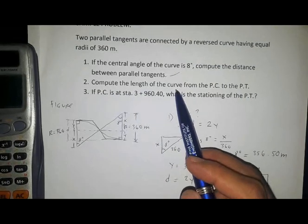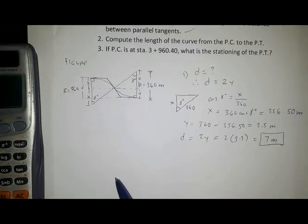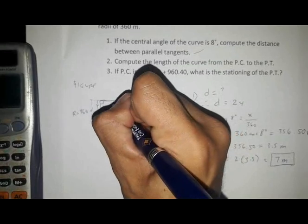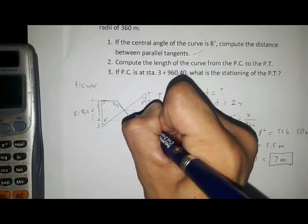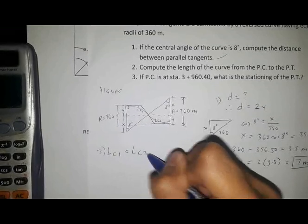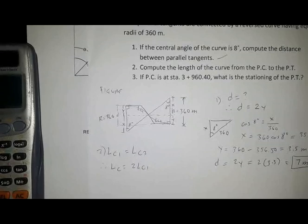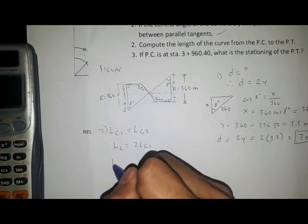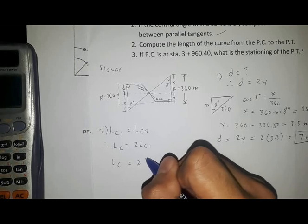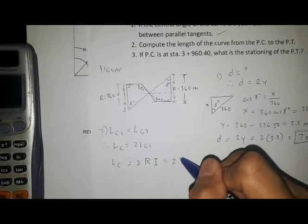Question number 2: compute the length of the curve from PC to PT. The total length of the reverse curve equals LC1 plus LC2. Since the radii are equal, LC1 equals LC2, therefore LC equals 2 × LC1.